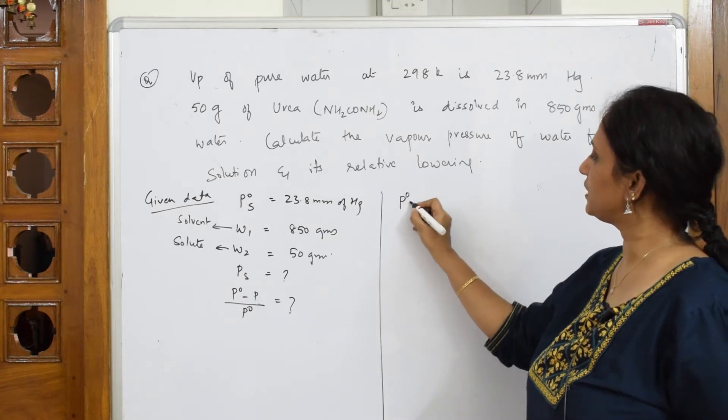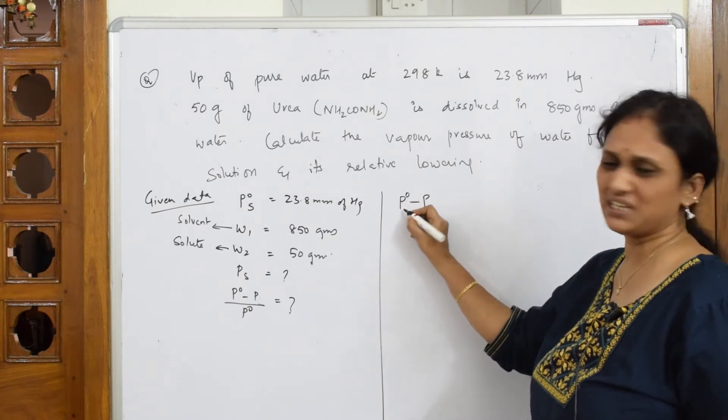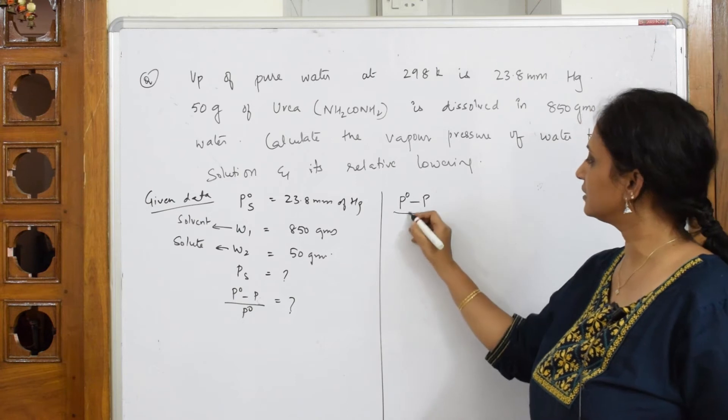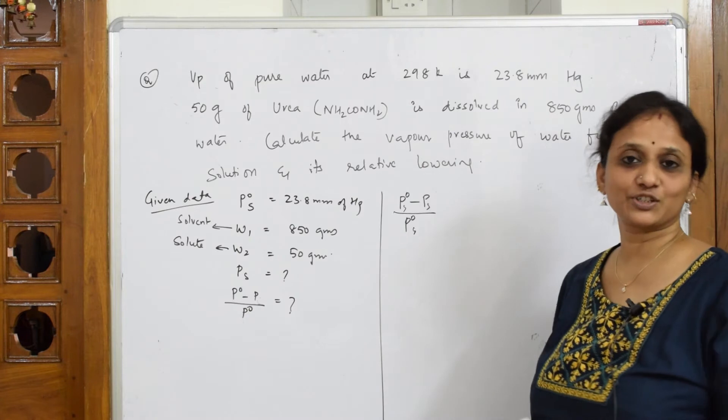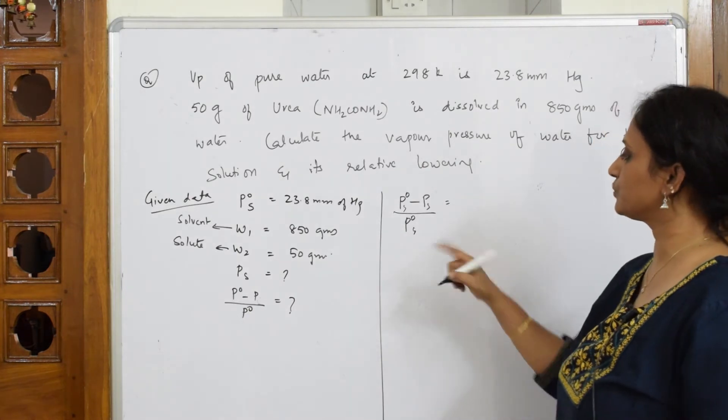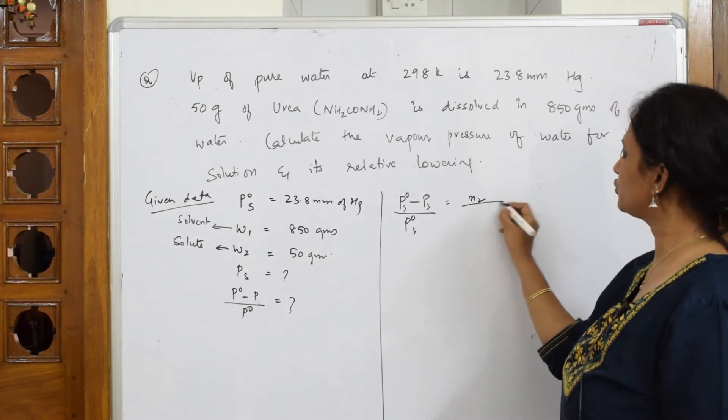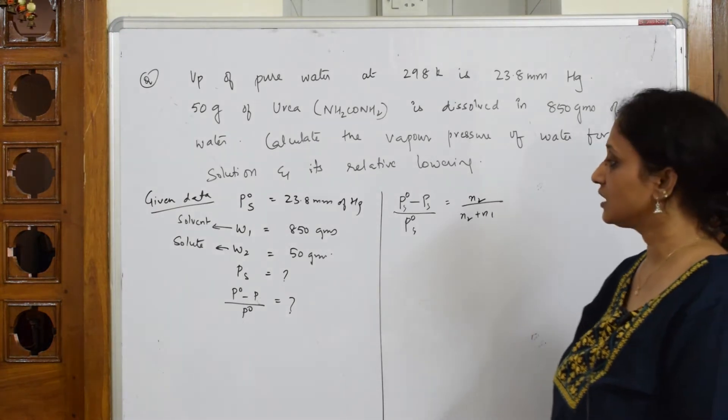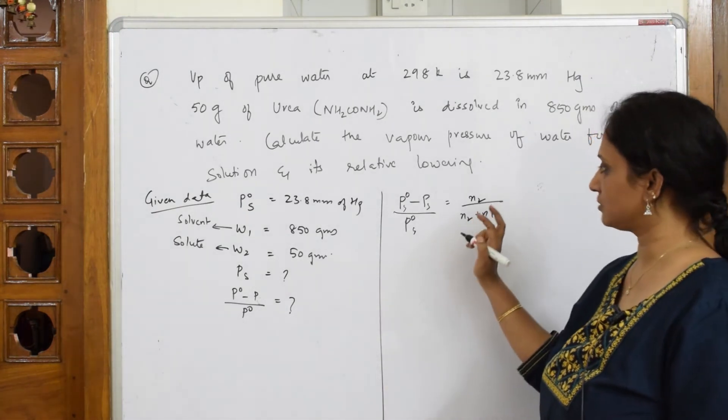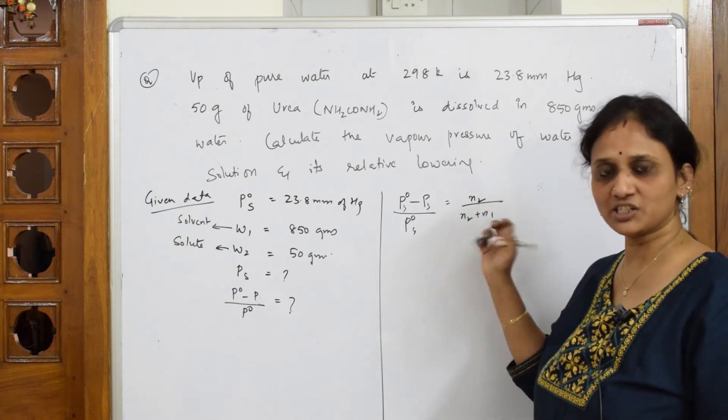Now I have to write the formula. What is the formula? P naught minus P, you can write PS, not a problem. P naught, which is equal to n2 by n2 plus n1. Why did I take n2 first? Because I have to find out the mole fraction.